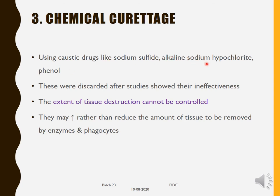Chemical curettage is an alternative to regular curettage. Caustic drugs such as sodium sulfide, alkaline sodium hypochlorite, and phenol have been used. These were disregarded after studies showed their ineffectiveness, and also because the extent of tissue destruction could not be controlled. Authors also found there could be an increase rather than reduction in the amount of tissue to be removed by phagocytic enzymes. Because of all these factors, chemical curettage is not being conducted currently.